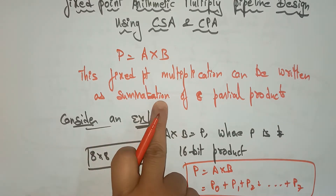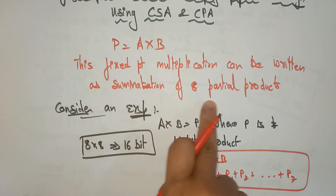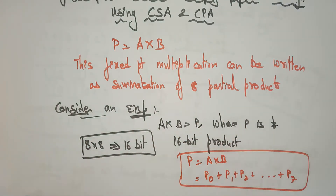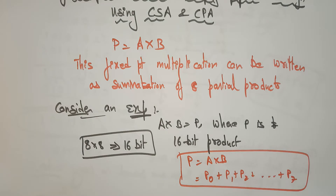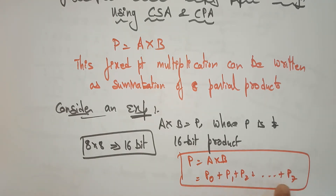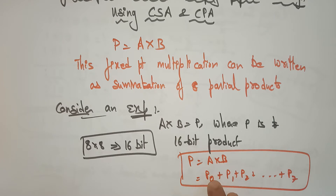The fixed-point multiplication can be written as a summation of eight partial products. When you multiply two eight-bit numbers you get a 16-bit product, and this multiplication is performed using adders. You perform the addition of eight partial products: A0 into B0, A1 into B1, A2 into B2, and so on — you calculate all eight bits.